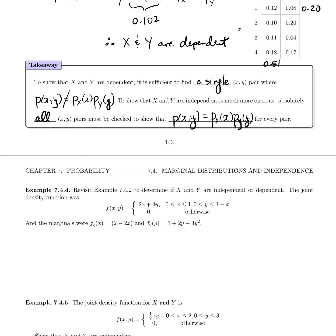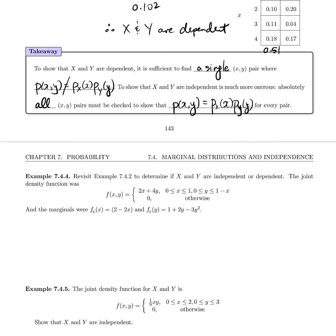Example 7.4.4, now we're looking at continuous variables. So we're going to revisit example 7.4.2 to determine if X and Y are independent or dependent. The joint density was here, and these are the marginals that we found. So what we want to see is the f(x,y), is this the product of the marginals?